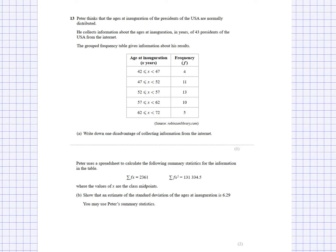So we have here, Peter thinks that the ages at inauguration of the presidents of the USA are normally distributed. He collects information about the ages at inauguration in years of 43 presidents of the USA from the Internet. The grouped frequency table gives information about his results. So we've got the age at inauguration, that's our x values, and we can see it's between 42 and 72 here. And we've got the frequency here.